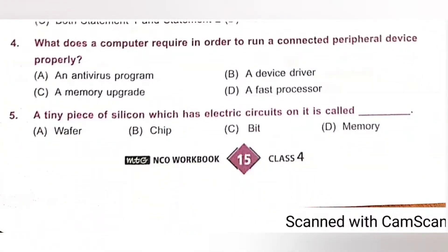Question 4: What does a computer require in order to run a connected peripheral device properly? A. Antivirus program, B. A device driver, C. A memory upgrade, D. A fast processor. A device driver is a program that controls a particular type of device attached to your computer. There are device drivers for printers, displays, CD-ROM readers, disk drives and so on. Option B, device driver, is the correct answer.